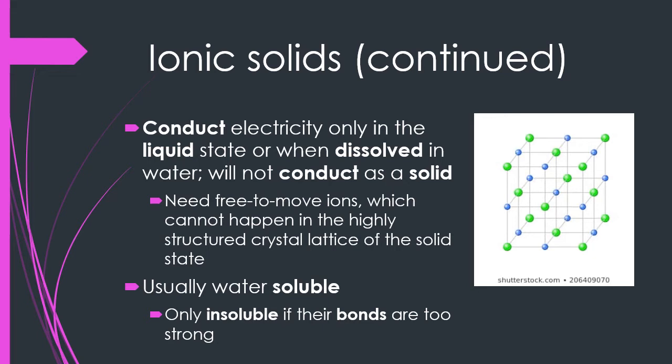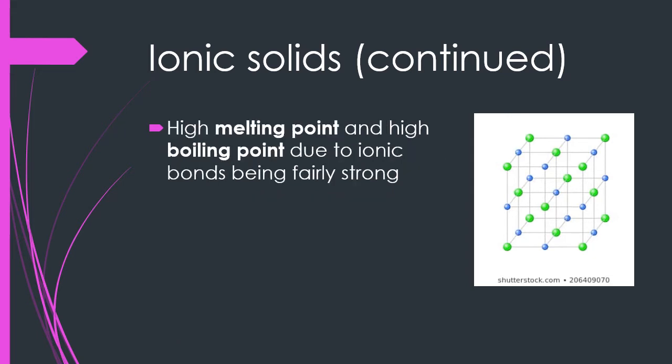Most ionic solids are water-soluble. The ones that aren't generally have very strong ion-ion interactions that are not broken by forming new interactions with water. Ionic solids usually have very high melting and boiling points due to the ionic bonds that hold them together being relatively strong, although there will of course be exceptions.